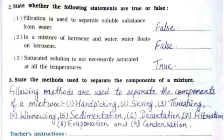First: filtration is used to separate soluble substance from water — this is false. Second: in a mixture of kerosene and water, water floats on kerosene — this is false. Third: a saturated solution is not necessarily saturated at all temperatures — this is true.